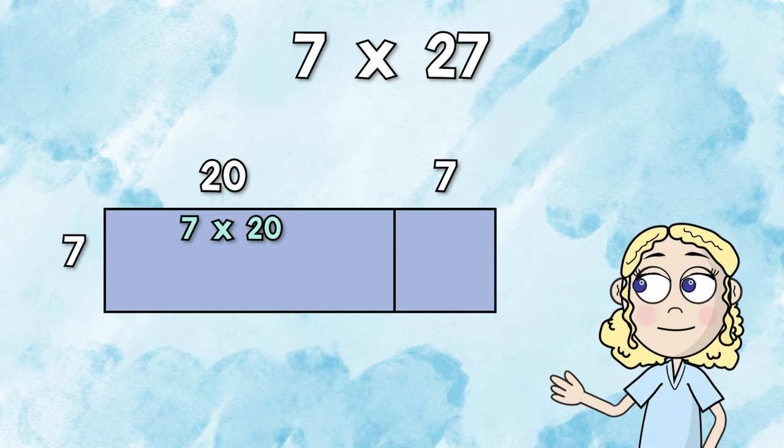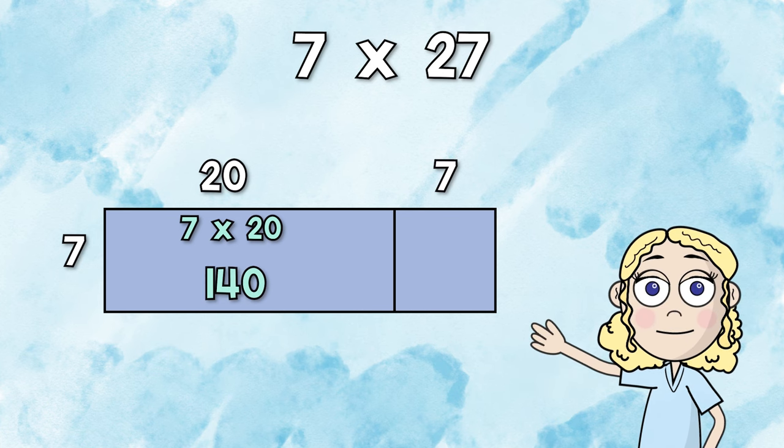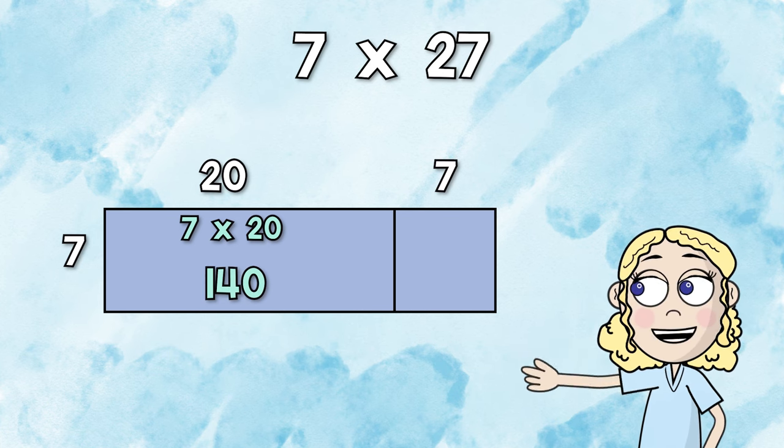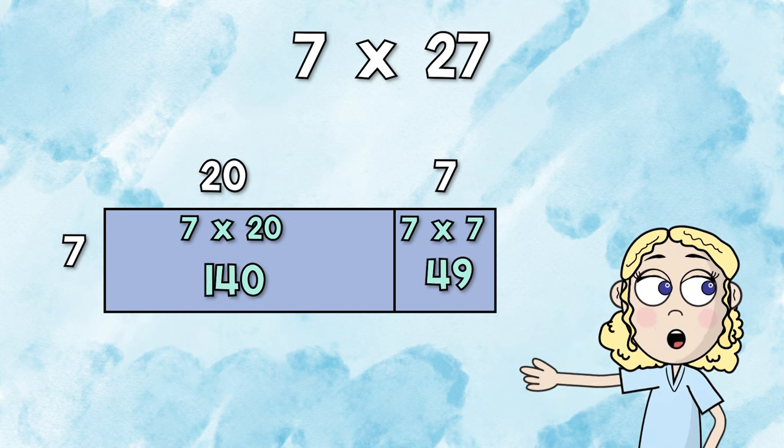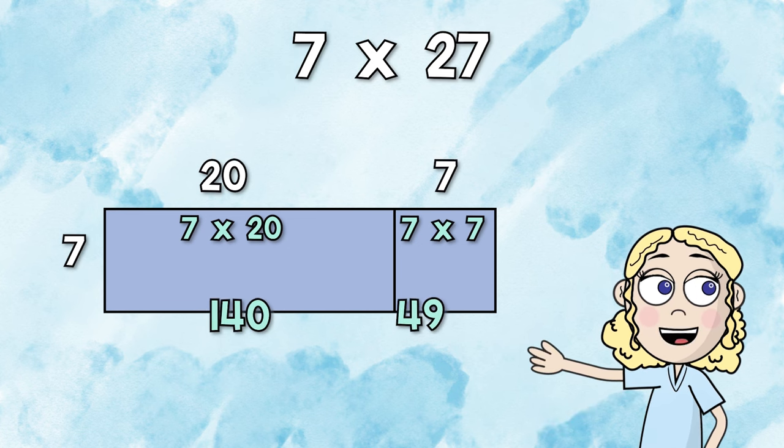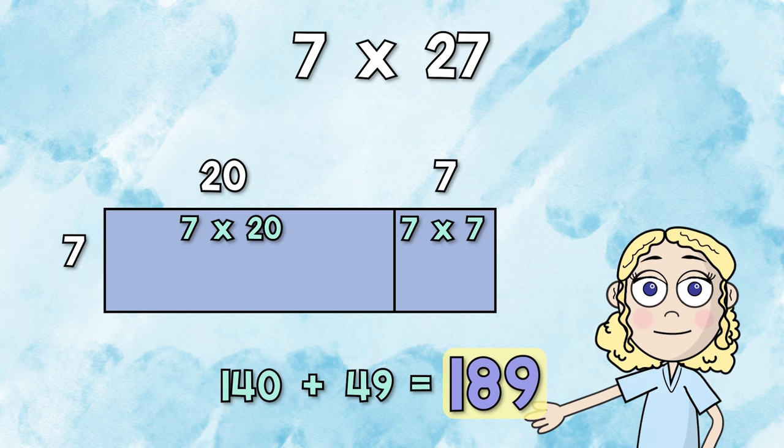Now let's multiply. First, we're going to do 7 times 20. Next, we're going to do 7 times 7. We're then going to take those two products and add them together to get our final product. Great job!